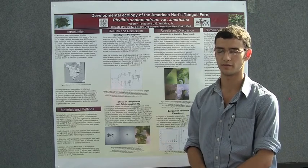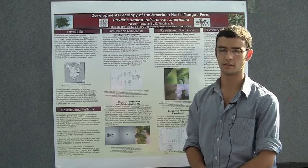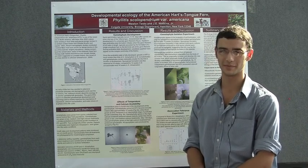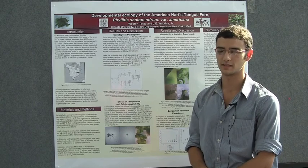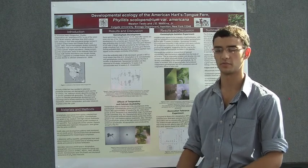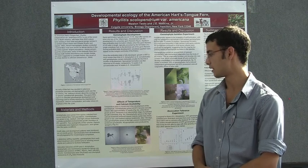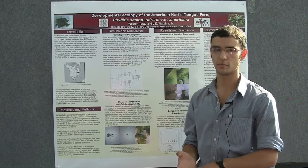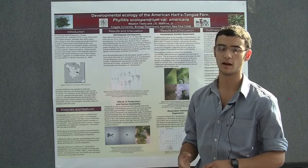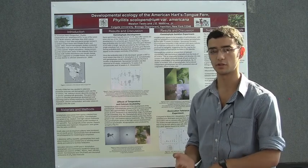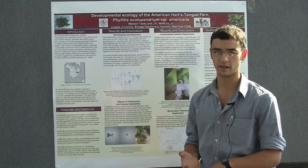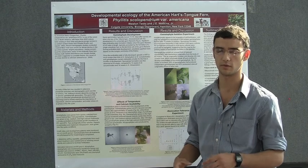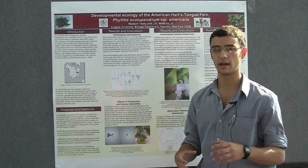Fifty percent of the plants in New York have died over the course of the last twenty years. So I set out to look at the gametophyte ecology to see if that could explain some things, since all the work done with this plant has been with the sporophyte generation. In particular, I focused on two aspects that might severely impact the development of the American Heartstongue Fern: temperature and calcium availability, as this fern is found in sheltered places with buffered temperatures year-round and on calcium-rich slopes.